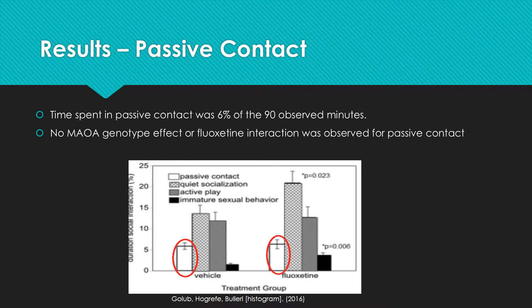The time spent in passive contact was 6% of the 90-minute observed time, and there were no fluoxetine or MAOA genotype effects or interactions. As shown in the histogram, both the vehicle and the fluoxetine-treated monkeys had about the same amount of passive contact interaction.